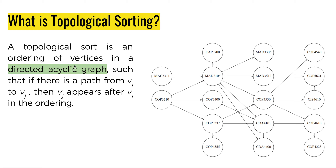Now comes the formal definition: a topological sort is an ordering of vertices in a directed acyclic graph such that if there is a path from VI to VJ then VJ should appear only after VI in the ordering. In other words, all the vertices in the path from VI to VJ should appear before we list VJ in the order.